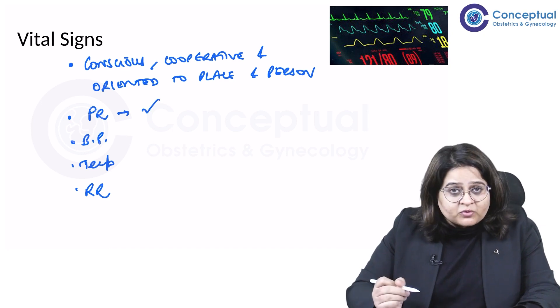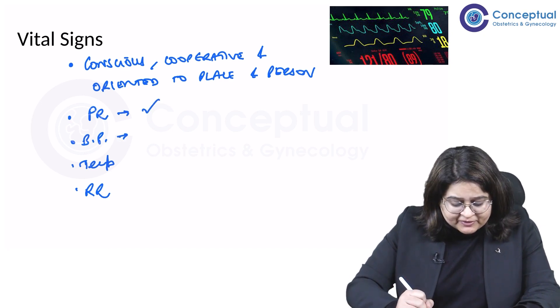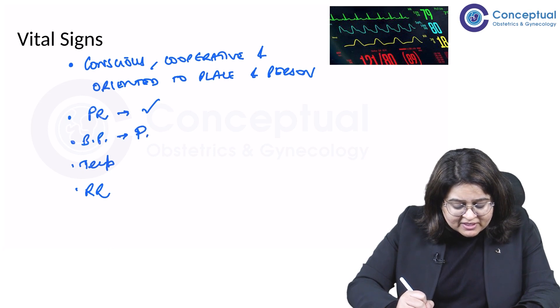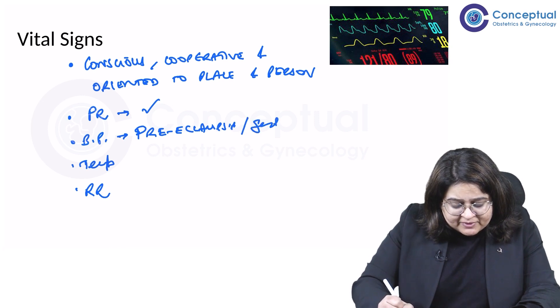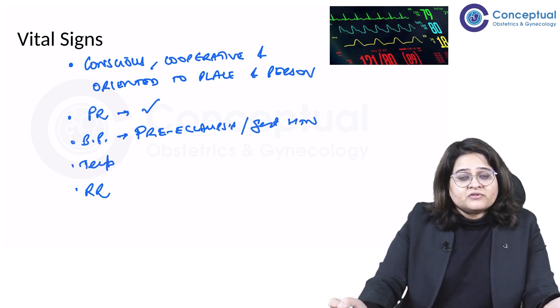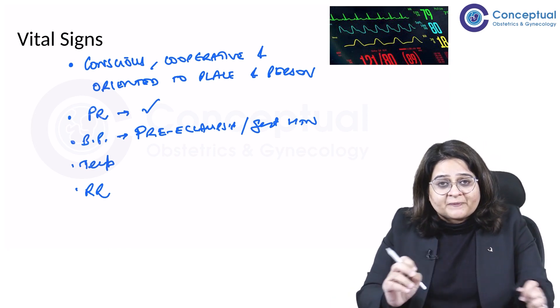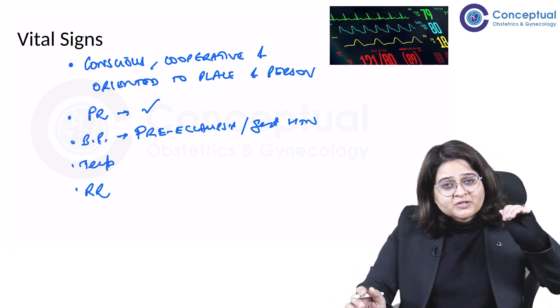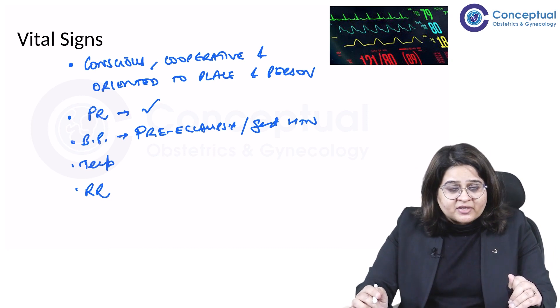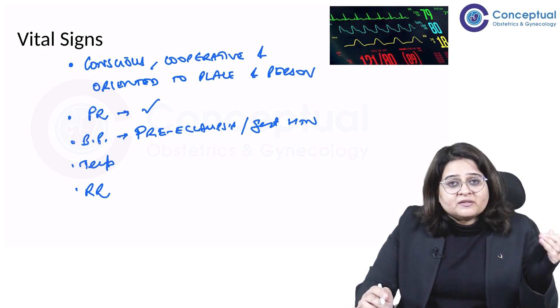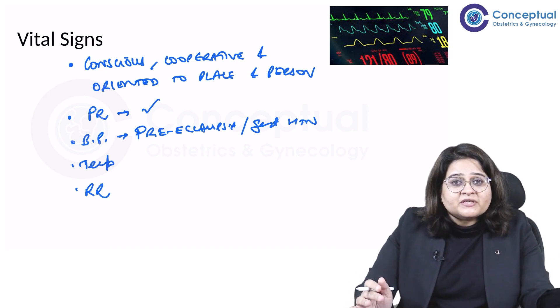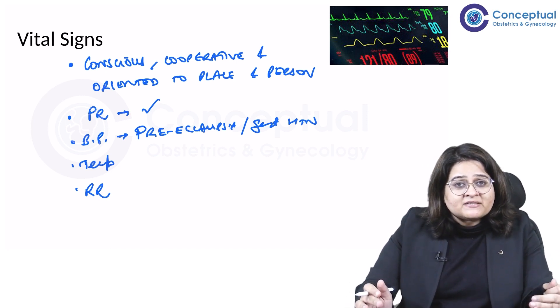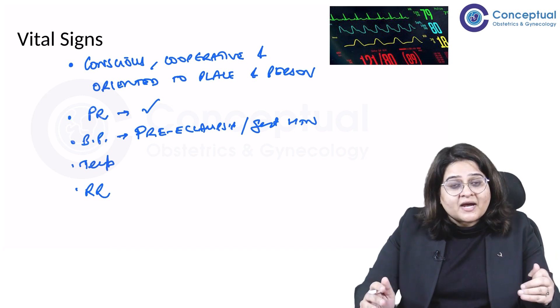So the pulse is very important to be checked. Then the blood pressure, very important in pregnancy because many times you're going to be given a case of preeclampsia or gestational hypertension or chronic hypertension. So of course, the first thing we need to see is the blood pressure. Normally in pregnancy, the blood pressure will fall, especially in the second trimester. And the blood pressure is very important to measure because apart from hypertension, hypovolemic states and septic states can also cause hypotension.